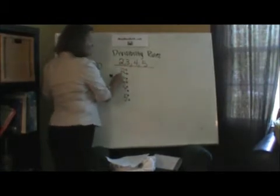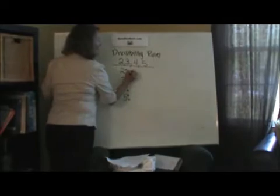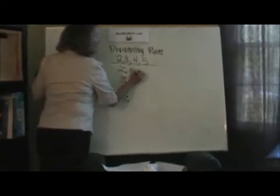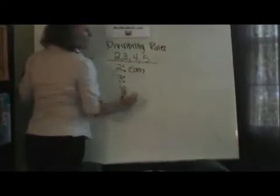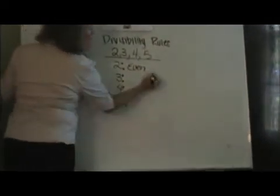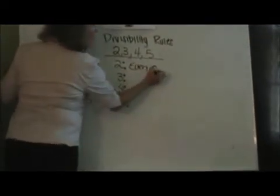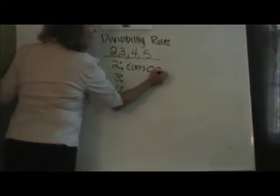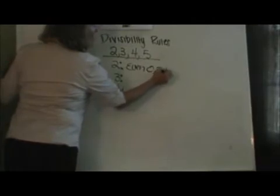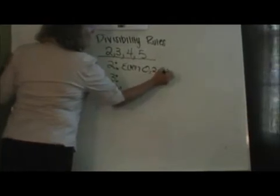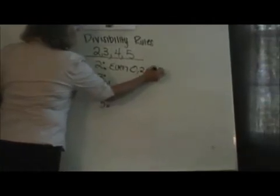If a number is divisible by 2, it is an even number. An even number ends in 0, 2, 4, 6, and 8.